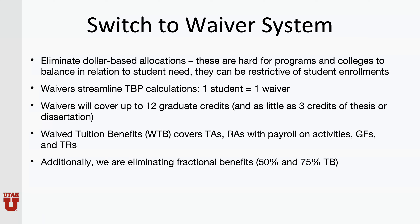Waivers will cover up to 12 graduate credits and as little as three credits of thesis or dissertation. Waived tuition benefits, or WTB, covers TAs, RAs with payroll on activities, GFs, and TRs. Additionally, we are eliminating fractional benefits — a 50% or 75% tuition benefit. Starting this coming academic year 25, students will need to be at 100% tuition benefit in order to participate in the tuition benefit program.